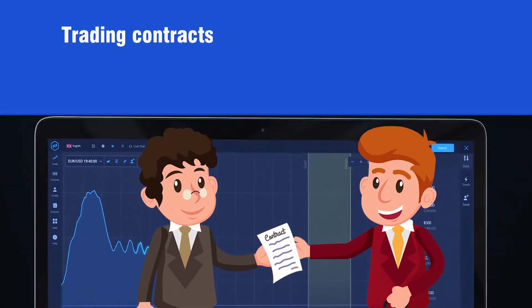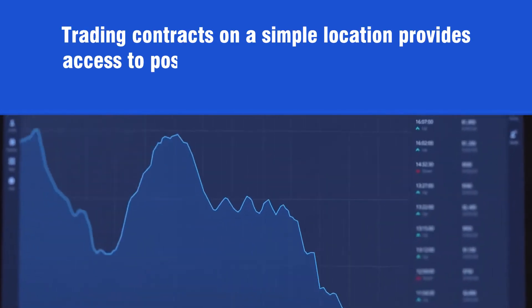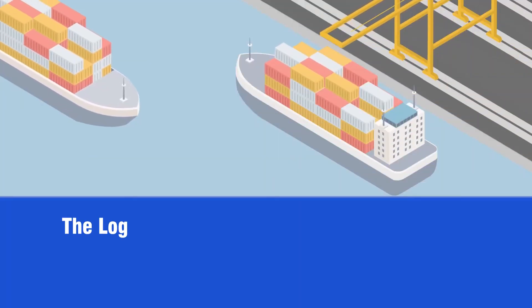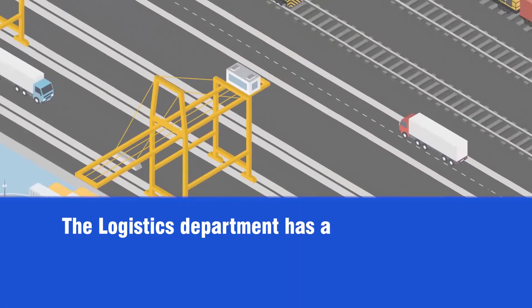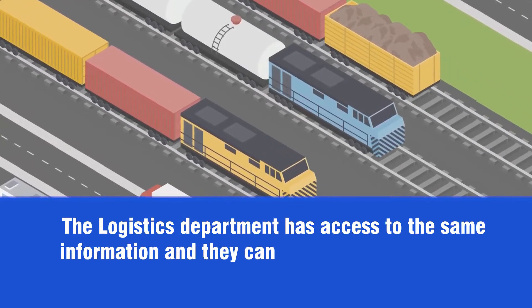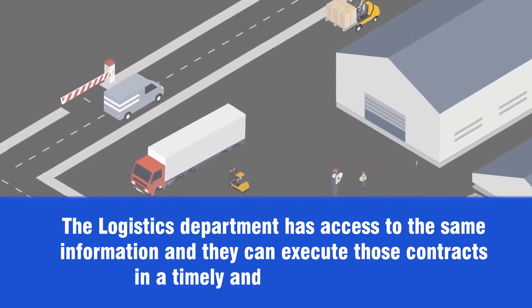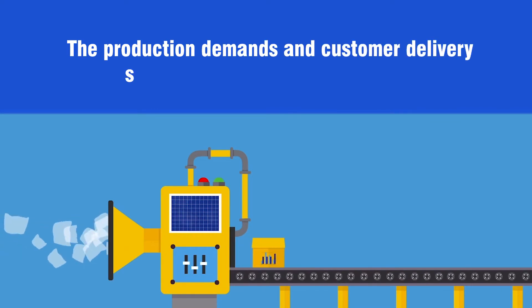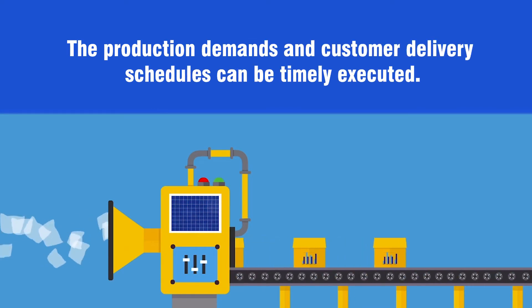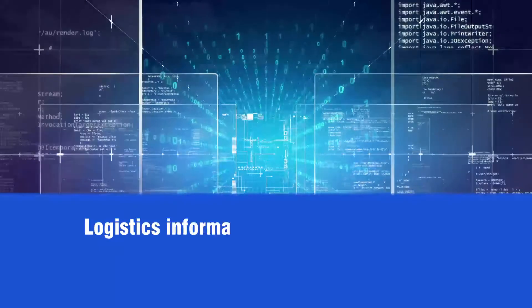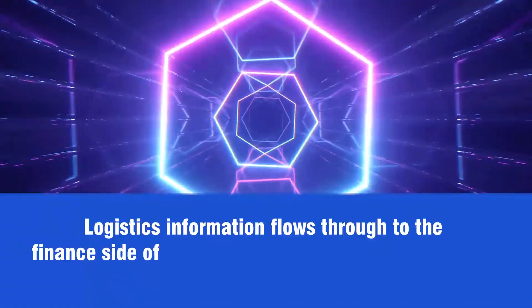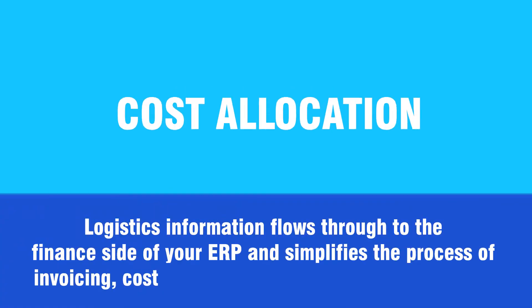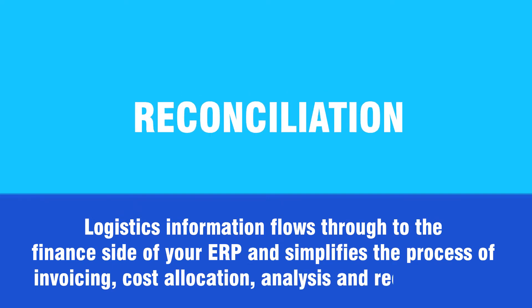Trading contracts on a single location provides access to position and valuation of quotes and hedging requirements. The logistics department has access to the same information and can execute those contracts in a timely and efficient manner. The production demands and customer delivery schedules can be timely executed. Logistics information flows through to the financial side of your ERP and simplifies the process of invoicing, cost allocation, analysis, and reconciliation.